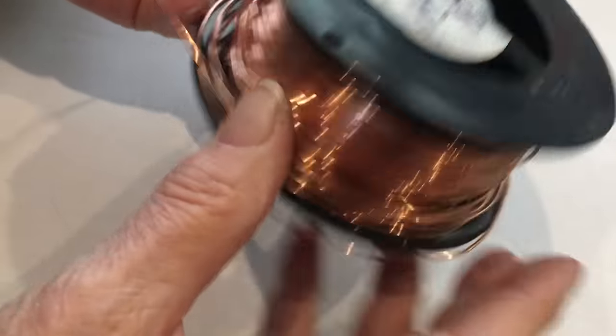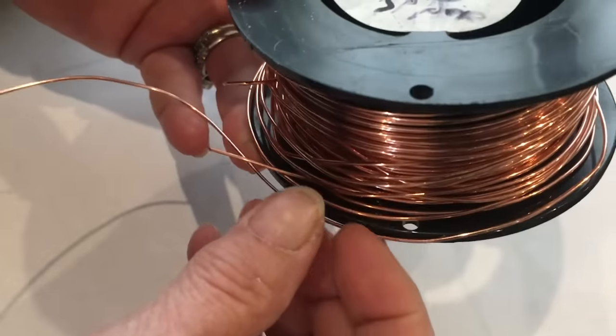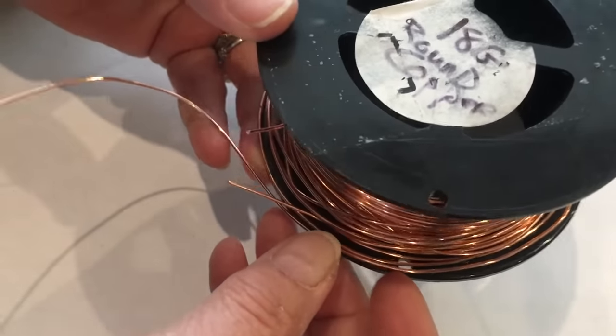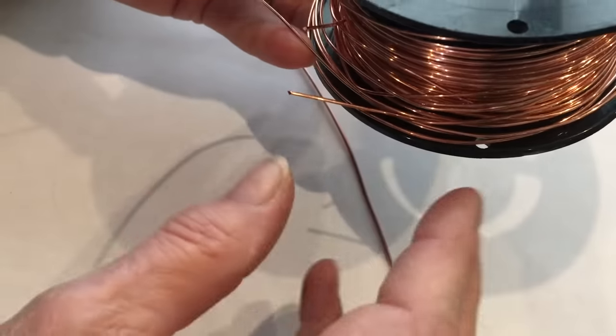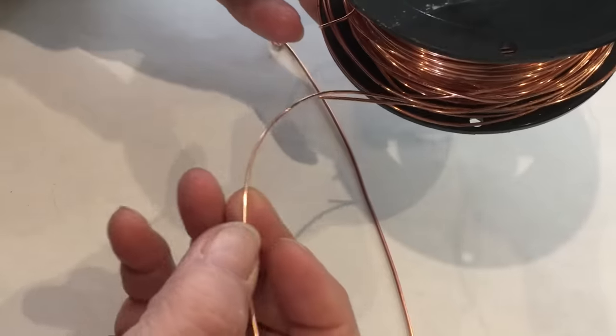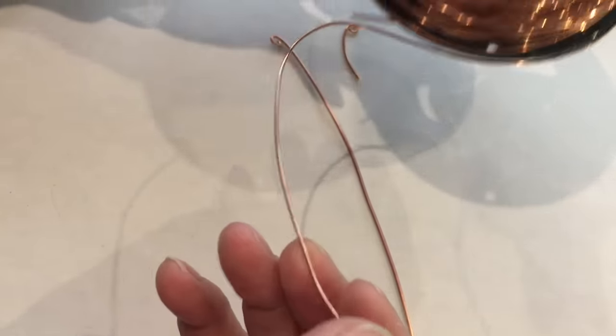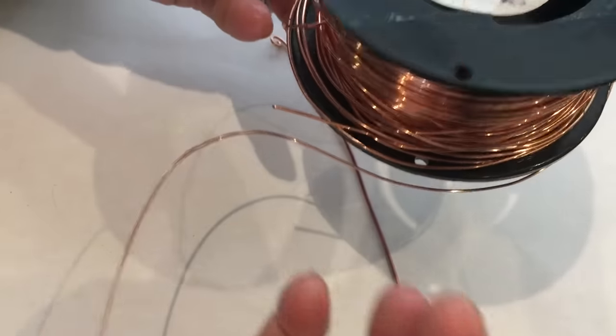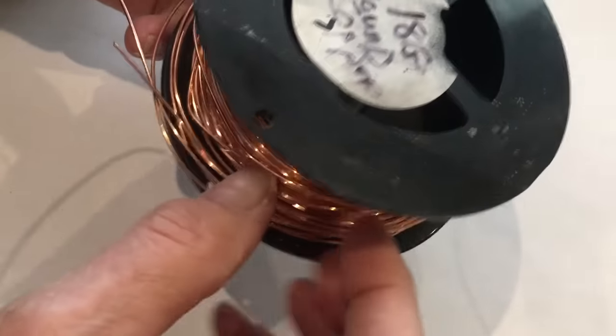For this video we're going to be using an 18 gauge round copper wire. It's pretty soft as it comes on the reel. I believe it's dead soft, which means that it's annealed or very flexible. But I've found that annealing this actually makes it even softer. So if you're having issues with your hands or you just want to make life easier, go ahead and anneal this ahead of time.